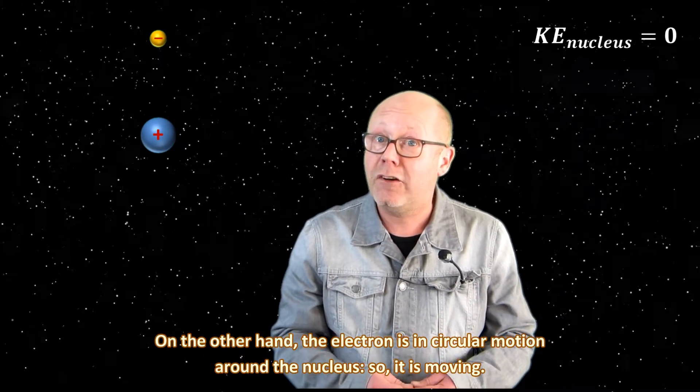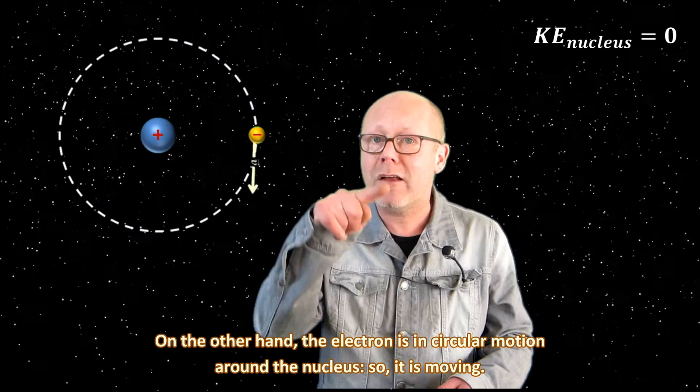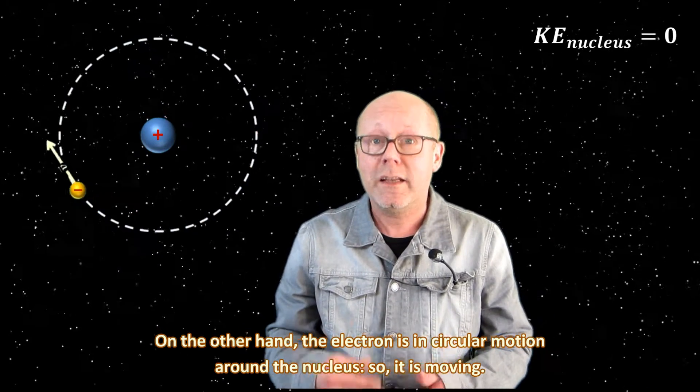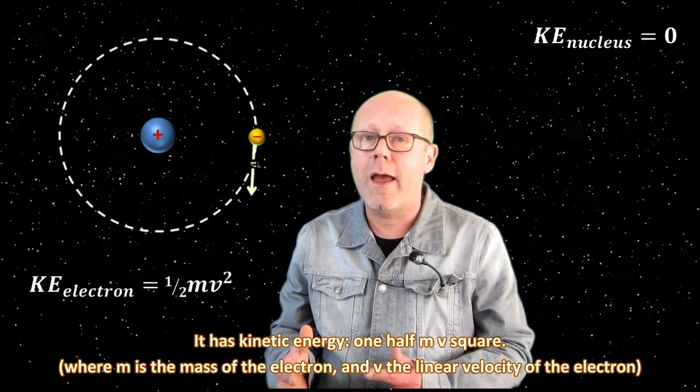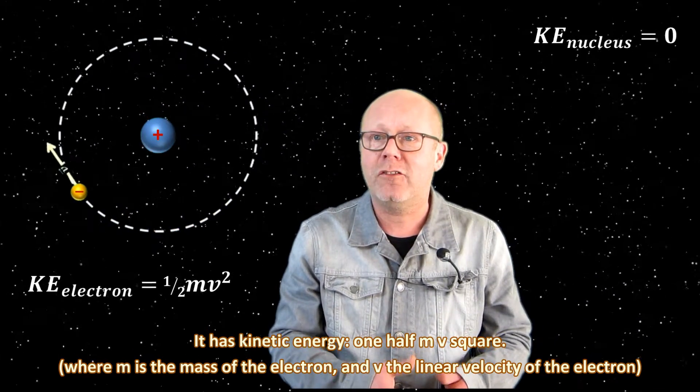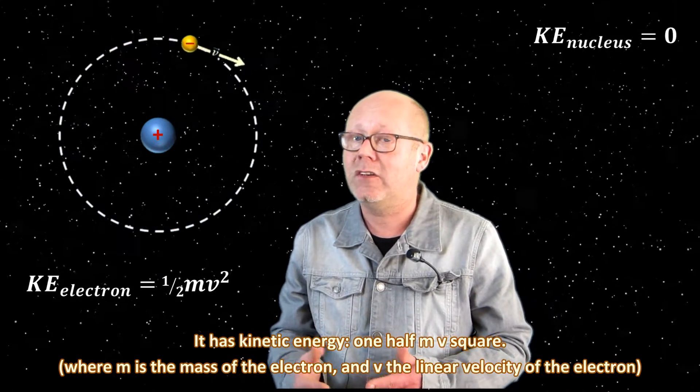On the other hand, the electron is in circular motion around the nucleus, so it is moving. It has kinetic energy, 1 half mv square, where m is the mass of the electron, and v the linear velocity of the electron.